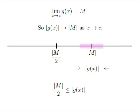The limit as x approaches c of g of x is m. So as x approaches c, the absolute value of g of x approaches the absolute value of m. Since the absolute value of m is positive and not zero, the absolute value of m over 2 is less than the absolute value of m. Since we can get g of x arbitrarily close to m, we can say that there exists a delta such that when the absolute value of x minus c is greater than 0 and less than delta, the absolute value of m over 2 is less than or equal to the absolute value of g of x. We will soon substitute the absolute value of m over 2 for the absolute value of g of x.